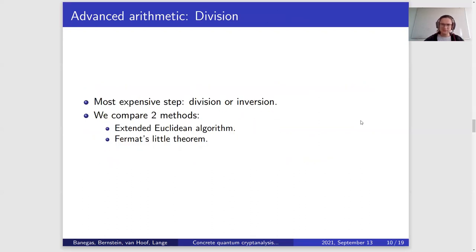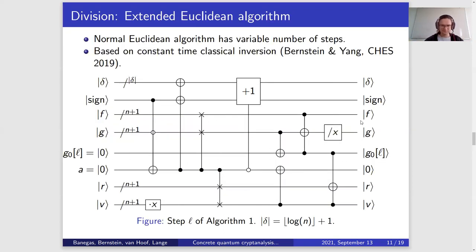Now we have multiplication — and finally, division, or inversion in our finite field — which will be the most expensive step. We compare two methods: extended Euclidean algorithm (XGCD) based inversion, and Fermat's little theorem based inversion. The extended Euclidean algorithm has a variable number of steps, so for reversible implementation we implemented a classical constant-time extended Euclidean algorithm based inversion. This is nice for the quantum case because you don't have to keep a counter around at the end of your algorithm.